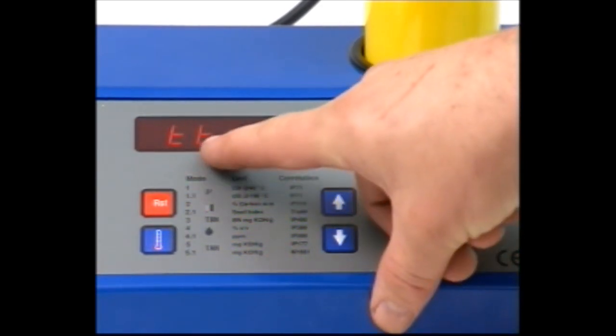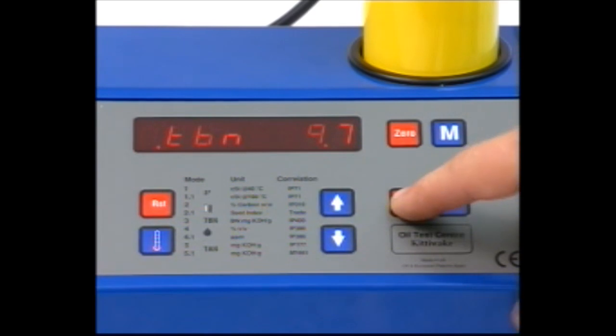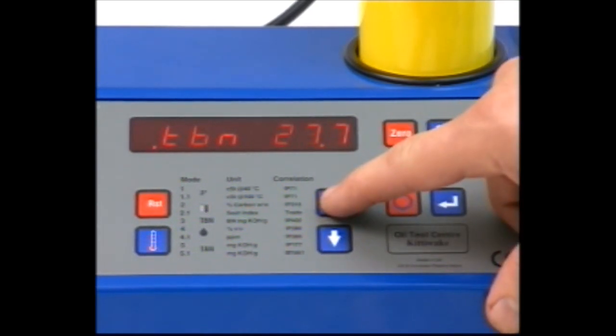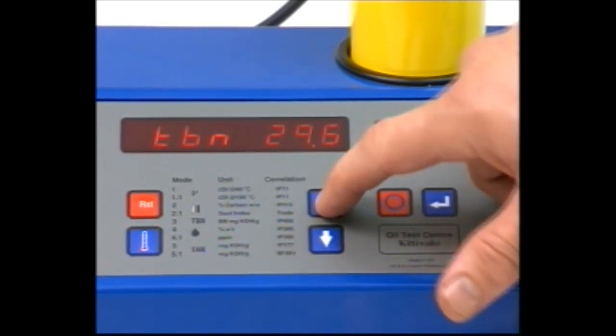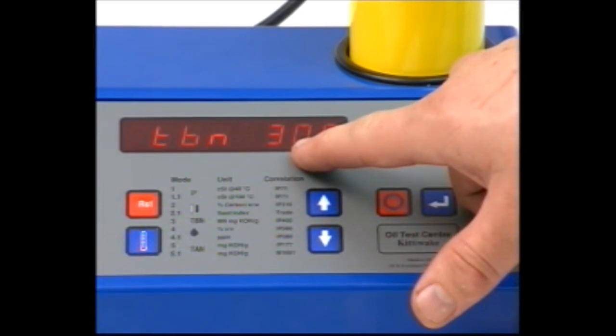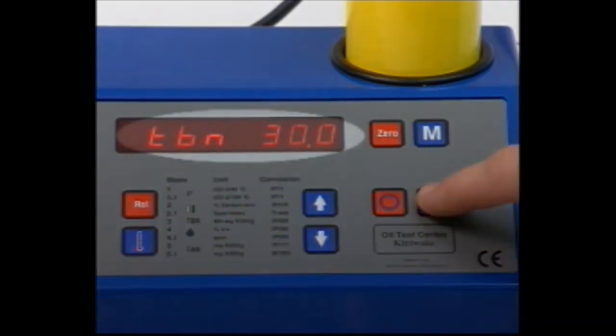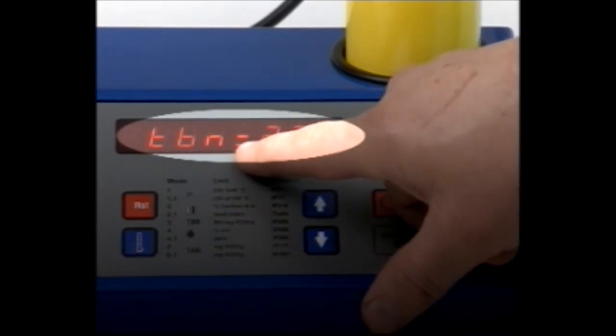The unit will now ask for the new oil TBN. Again, use speed and arrow keys to enter this. Now press enter. The display will show the used oil TBN.